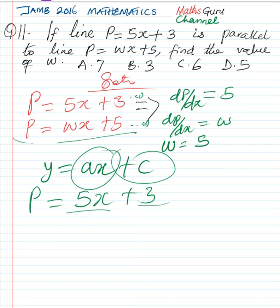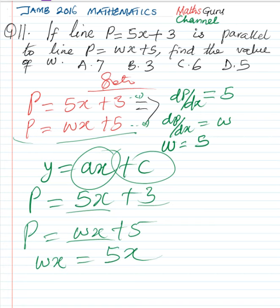So for the other line here, that is the second line, P equal to wx plus 5, 5 is the intercept and w is the gradient. So when we compare these two sides, we have wx equal to 5x. Comparing the gradient alone, we have w equal to 5.